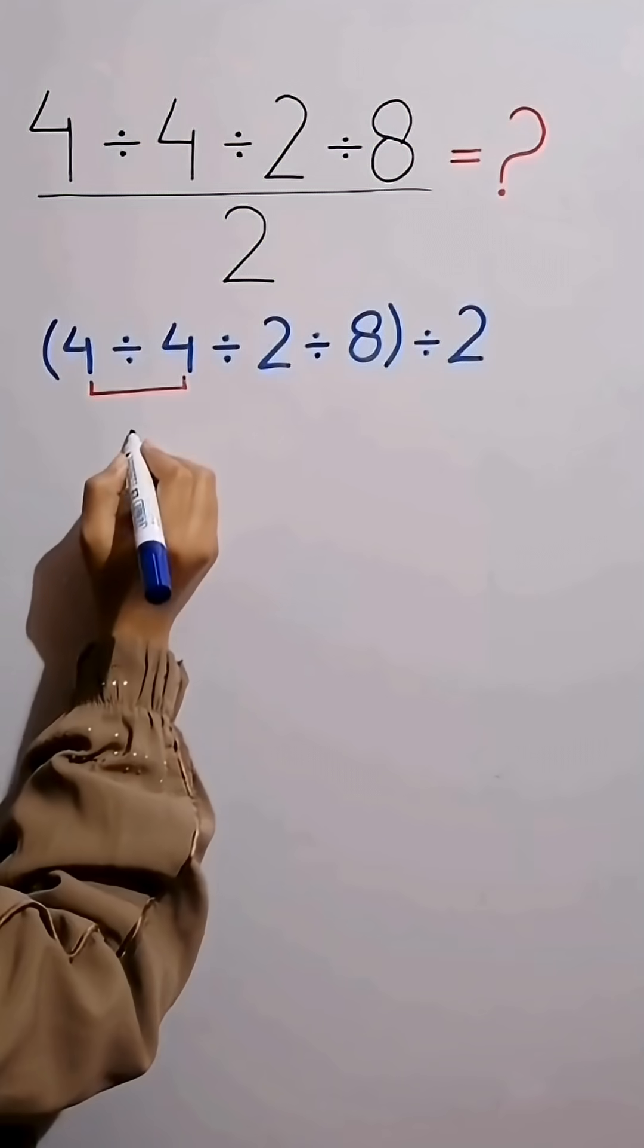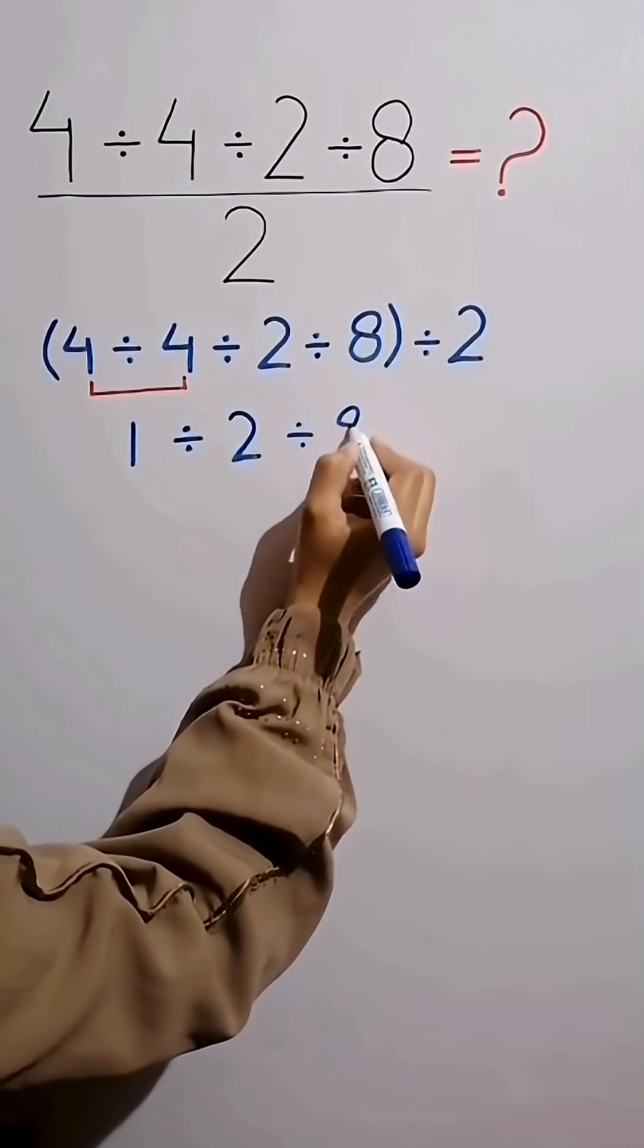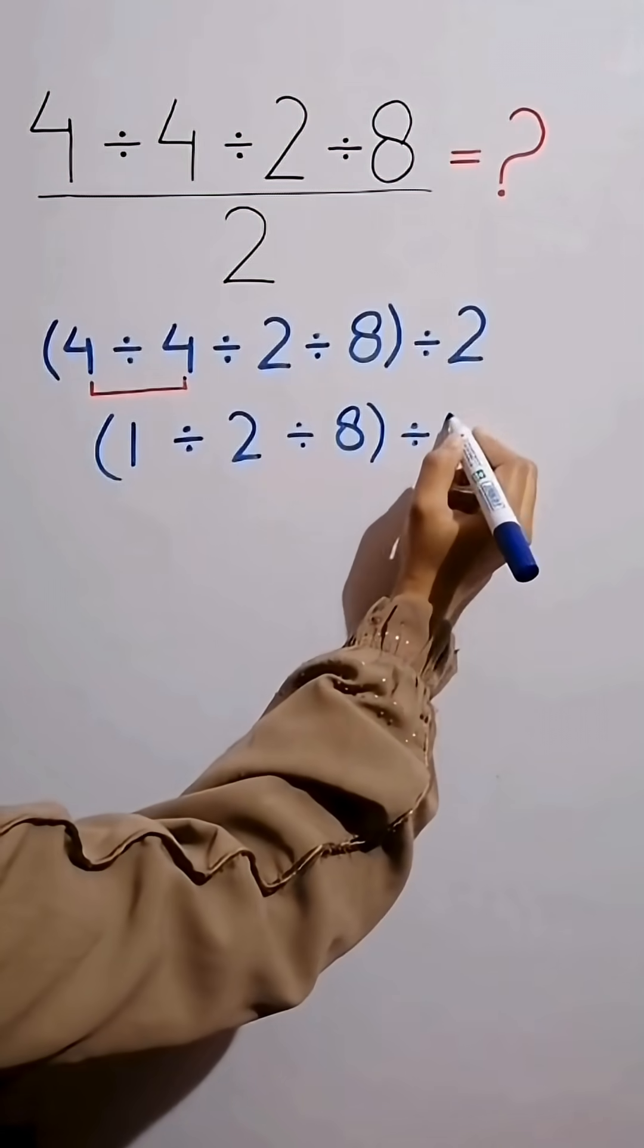4 divided by 4 equals 1, then divided by 2 divided by 8 inside the parentheses. And bring down divided by 2.